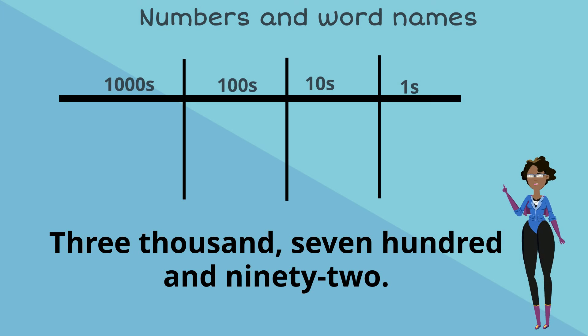Let's insert these numbers into our place value table. 3 goes into the thousands place, 7 in the hundreds place, 9 in the tens and 2 in the ones place. And that gives us the numerical number 3792. So that's 3792. Well done!